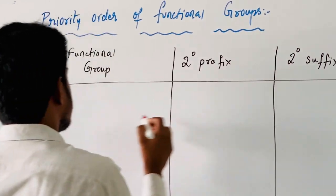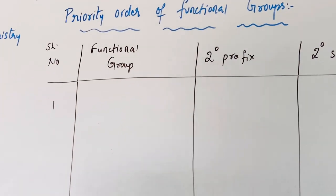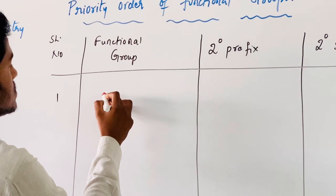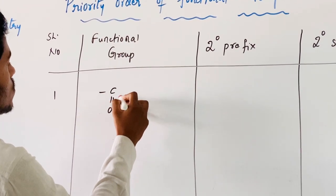Coming to the first one, that is carboxylic acid. Carboxylic acid: R-C-O-O-H.